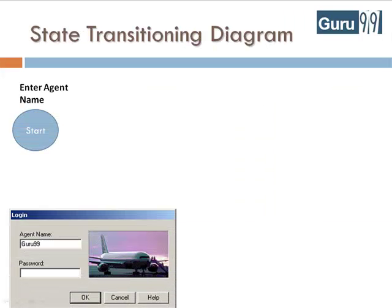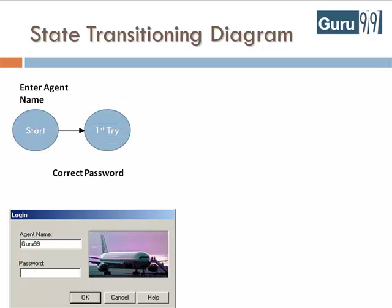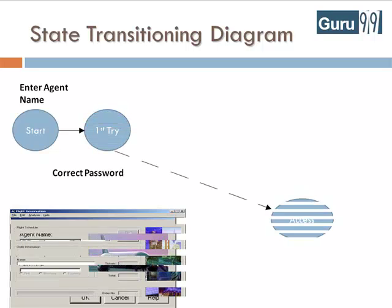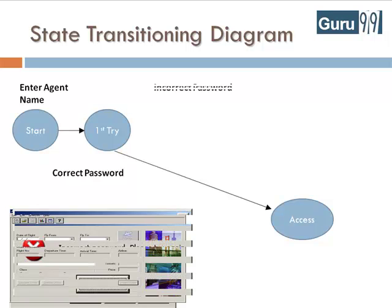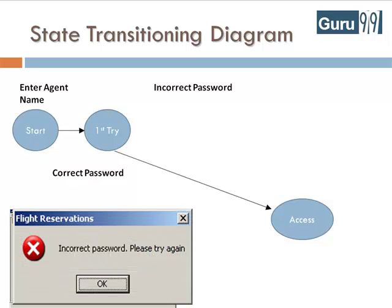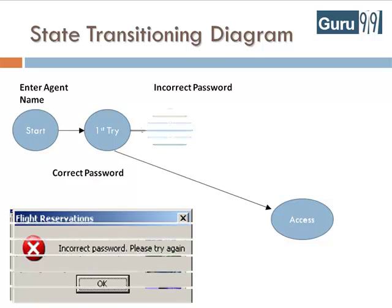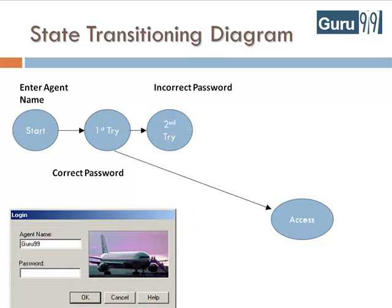Consider you have entered the agent name in the login screen. On first attempt, if you enter the correct password, you are given access to the application. In case you entered an incorrect password, an error screen is shown and you are asked to enter the password again the second time.